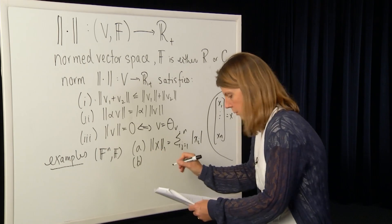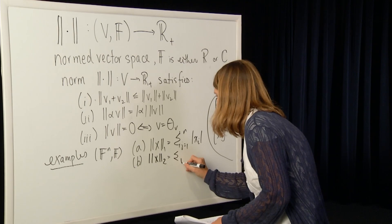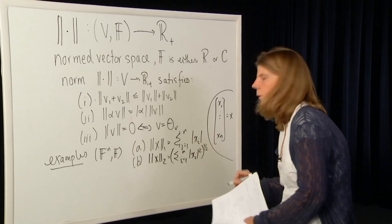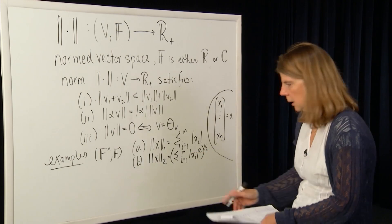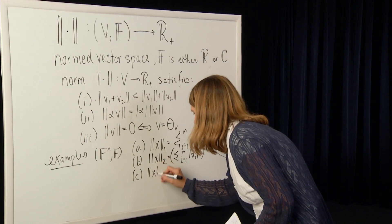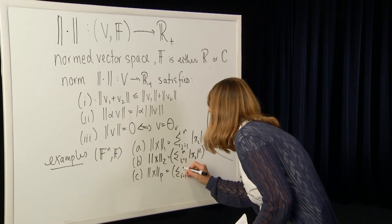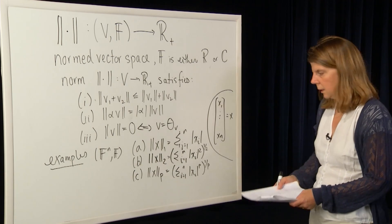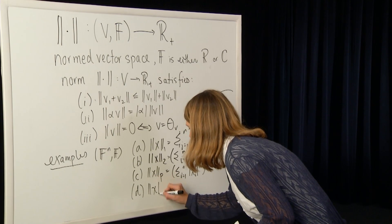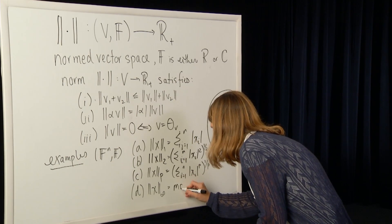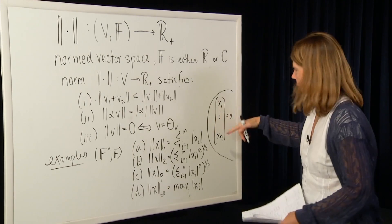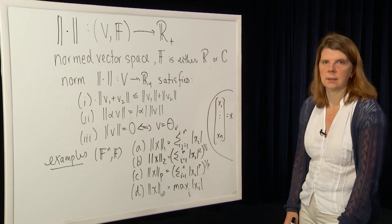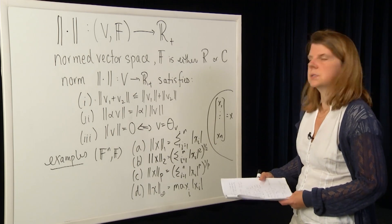We can talk about other norms. The 2-norm is the summation from i equals 1 to n of the squares of the individual elements, and we take the square root — that's called the L2 norm. In general, we can talk about a p-norm: the summation from i equals 1 to n of x_i to the p, and then we take the p-th root of that summation. And finally, we often use the infinity norm, which is just the max absolute value — the max over i equals 1 to n of the absolute value of x_i.